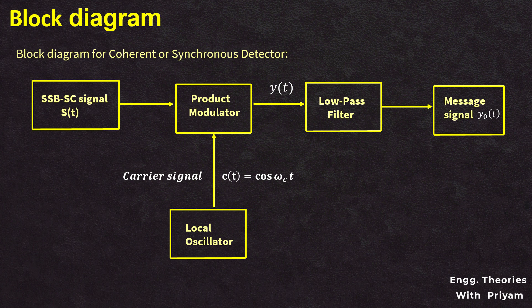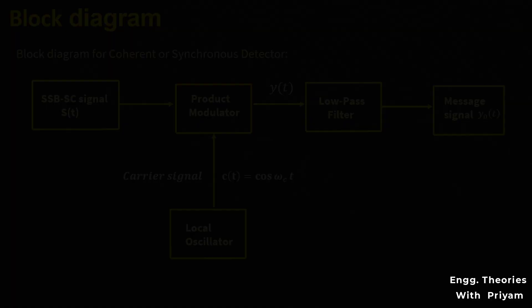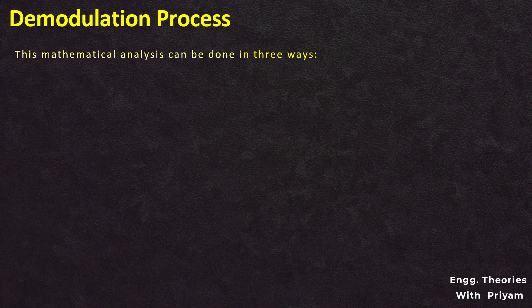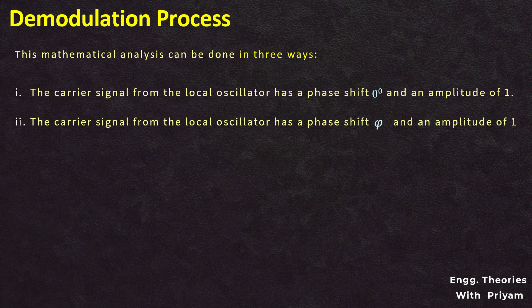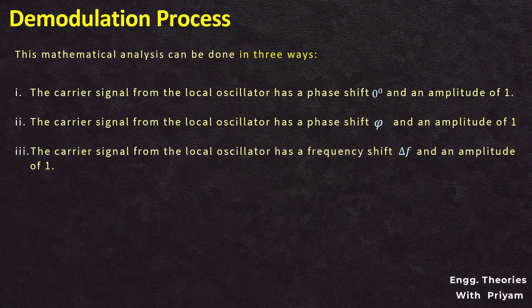The mathematical analysis for coherent detection of the SSBSC modulated signal can be done in three cases. First, we consider the carrier from the local oscillator has a phase shift of 0° and amplitude of 1. Next, we consider the case where the carrier has a phase shift of φ and amplitude of 1. Finally, we consider the case where the local oscillator has a frequency shift of Δf and amplitude of 1. In this lecture, we discuss the first case: phase shift of 0° and amplitude of 1.